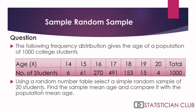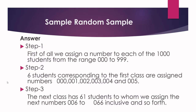Our first task is to select 20 students at random from this population using a random number table. At the first step, we assign a number to each of the 1000 students from the range 0 to 999. The six students corresponding to the first class are assigned numbers 000, 001, 002, up through 005 — that is, numbers 0 to 5 for the six students.